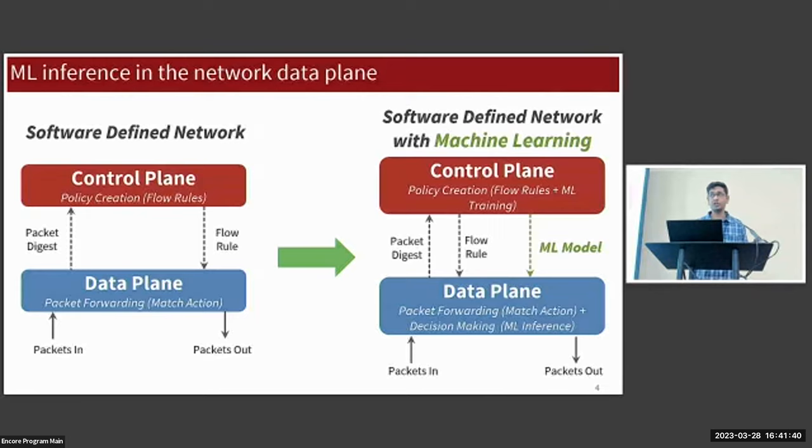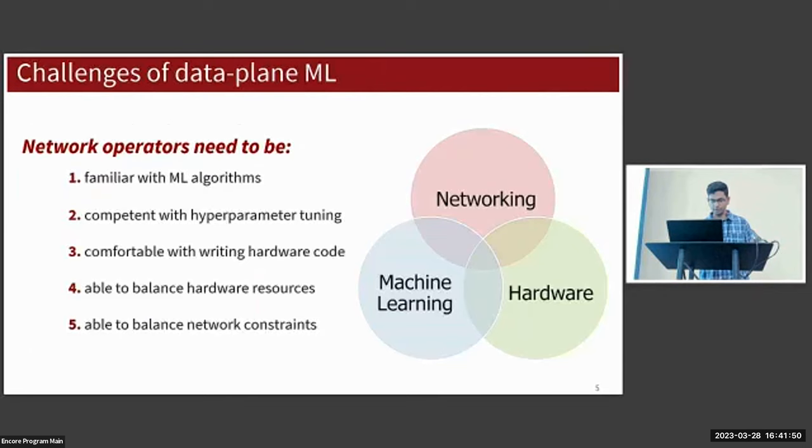Switch architectures like Taurus actually allow this to happen at a per-packet granularity. With all this upcoming research in ML in the data plane, how do network operators actually build these data plane ML models?